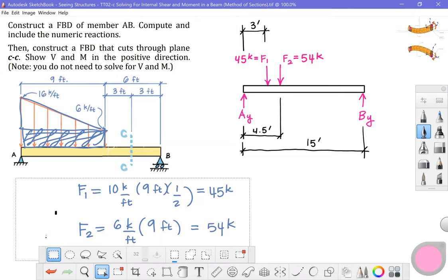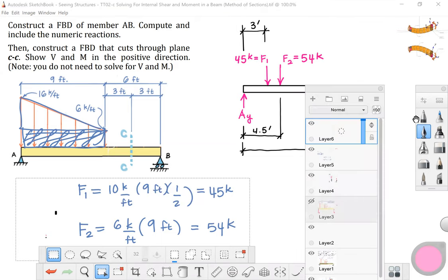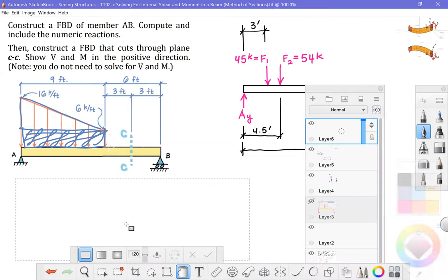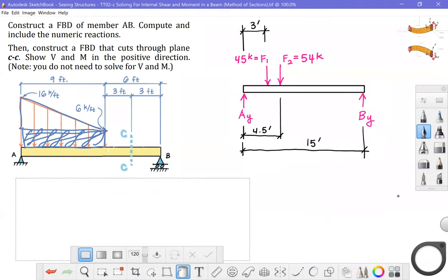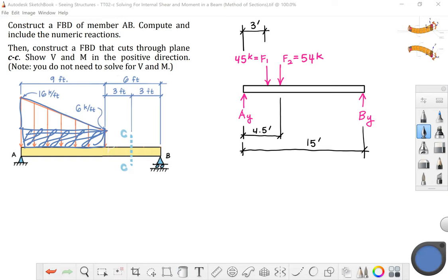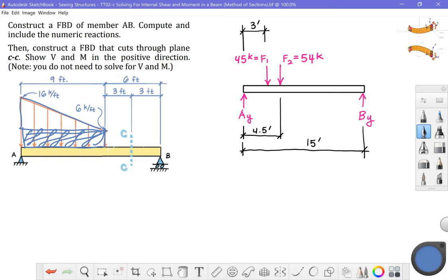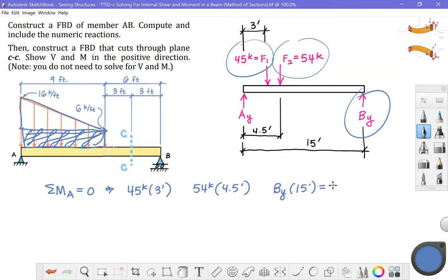Now that I've got that sorted out, I'm going to mask these calculations I just did and go back to a blue color. So now that we've got our distributed loads or line loads turned into equivalent forces or equivalent point loads, we're ready to do our equations of equilibrium. I'm going to choose to do a summation of moments about A set that equal to zero. How many terms? One, two, three. First term 45 kips distance three feet. Next term 54 kips distance 4.5 feet. Last term B sub y unknown distance 15 feet. Set that equal to zero. Now we do the signs.